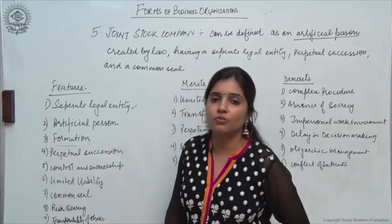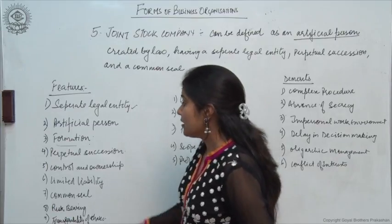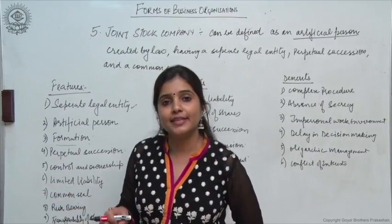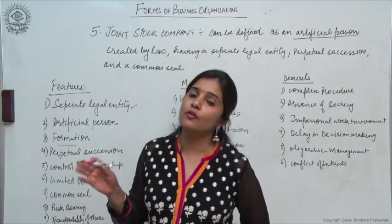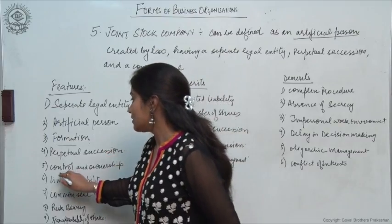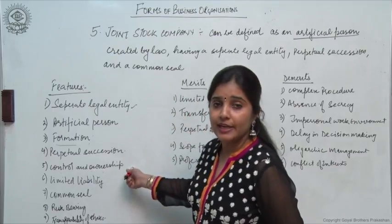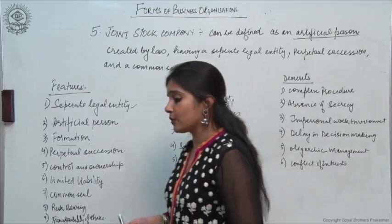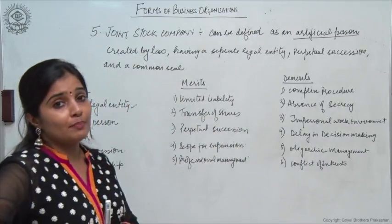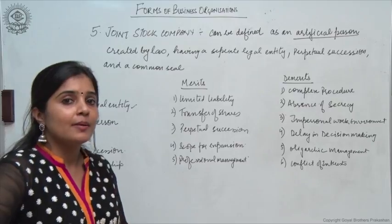Perpetual succession: the company continues to exist despite the death, lunacy, or bankruptcy of any of its members. Then, control and ownership: the ownership of the company lies with the shareholders, but the control of the company lies with the management.